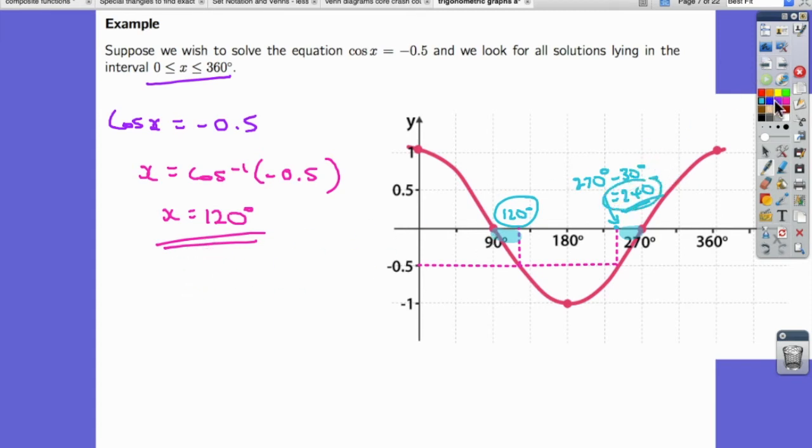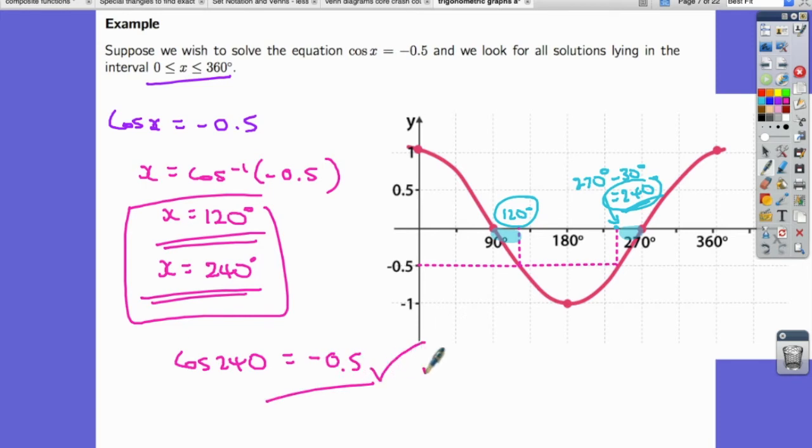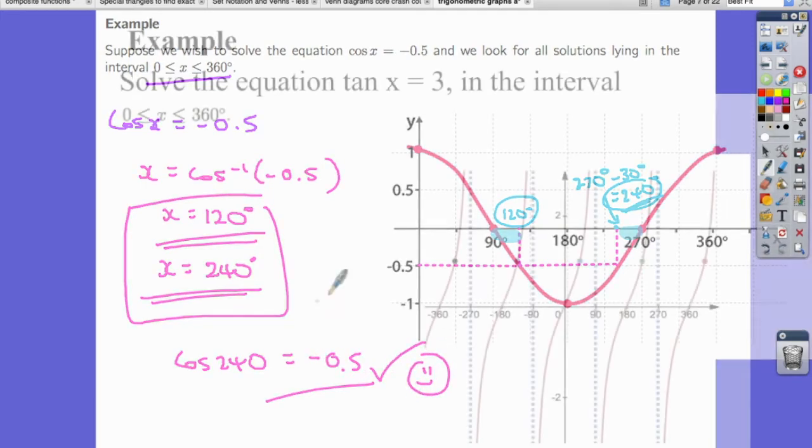And again, I can put that into my calculator and I can check it. So 240 degrees, I think, they're my two answers. So I'm going to go and check in my calculator that cos 240 equals negative 0.5. And I am absolutely correct there. So great, I'm happy.